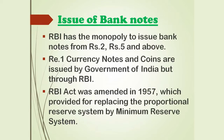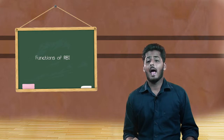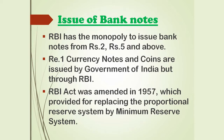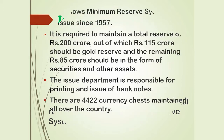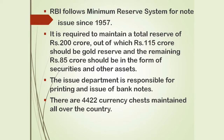The first one is issue of banknotes. RBI has the monopoly to issue banknotes of rupees 2, rupees 5 and above. Rupees 1 currency notes and coins are issued by the Government of India but through RBI. The RBI Act was amended in 1957, which provided for replacing the proportional reserve system by the minimum reserve system. RBI follows the minimum reserve system for notes issued since 1957. It is required to maintain a total reserve of rupees 200 crores, out of which rupees 115 crores should be gold reserve and the remaining rupees 85 crores should be in the form of securities and other assets.